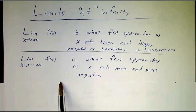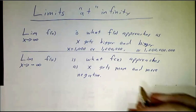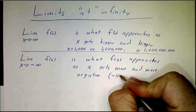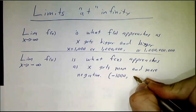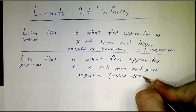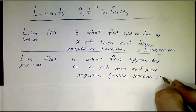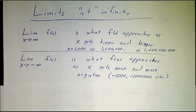Same thing for the limit as x goes to minus infinity. Instead of looking at a thousand and a million and a billion, you look at minus a thousand, minus a million, minus a billion. Big negative numbers.